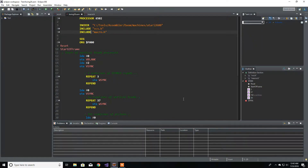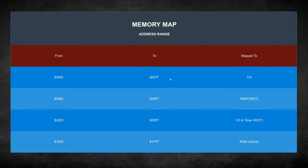Hey guys, welcome back. In this video I'll be going over the memory map and map locations for the Atari 2600. Here we have a quick diagram of our map locations. If you need to know what a memory map is, I did make a video about it. Basically, we have this address range from 0 to 7FF — that's the TIA, or Television Interface Adapter. Whenever we write in this range, we're talking to the TIA. The TIA is going to hog the memory, so all those addresses map to the TIA.